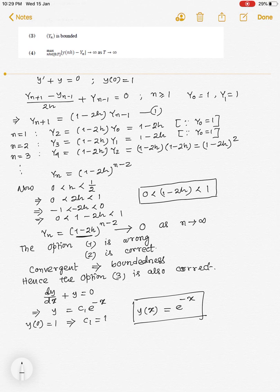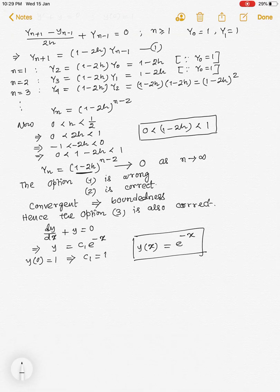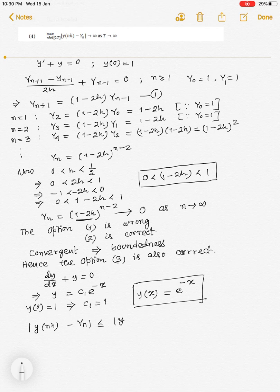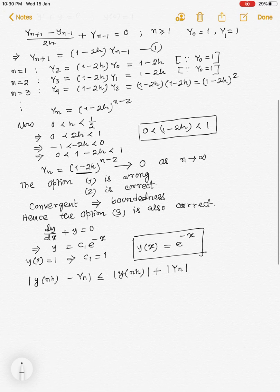Now, in fourth option, we are asked that maximum of |y(nh) - yₙ| tends to infinity as n tends to infinity. Now, we may write |y(nh) - yₙ| ≤ |y(nh)| + |yₙ|. Now, this is equal to |e^(-nh)| + |yₙ|.